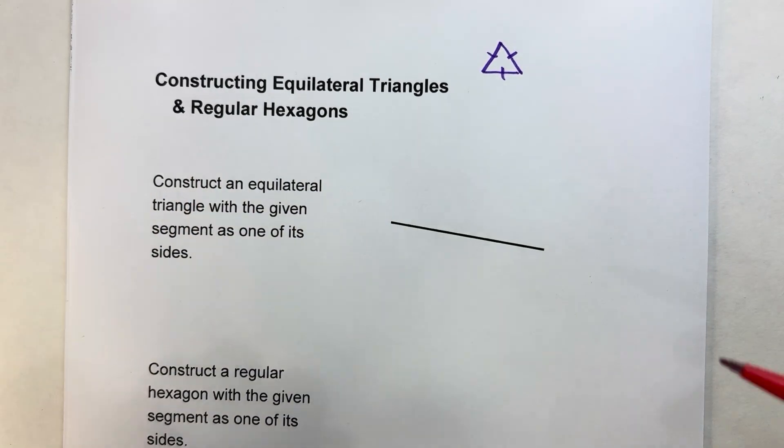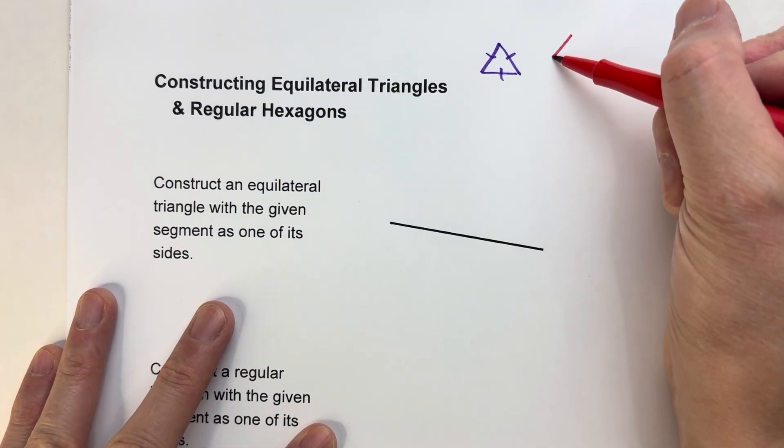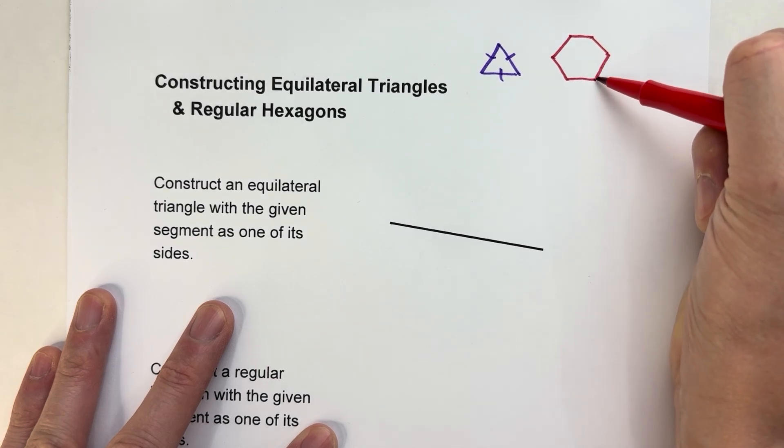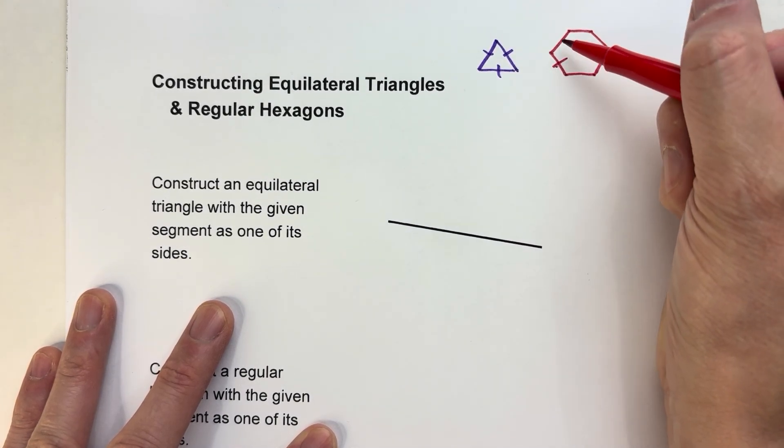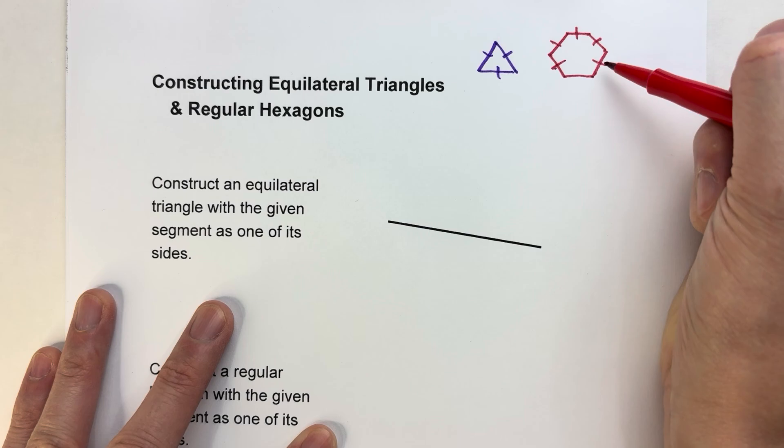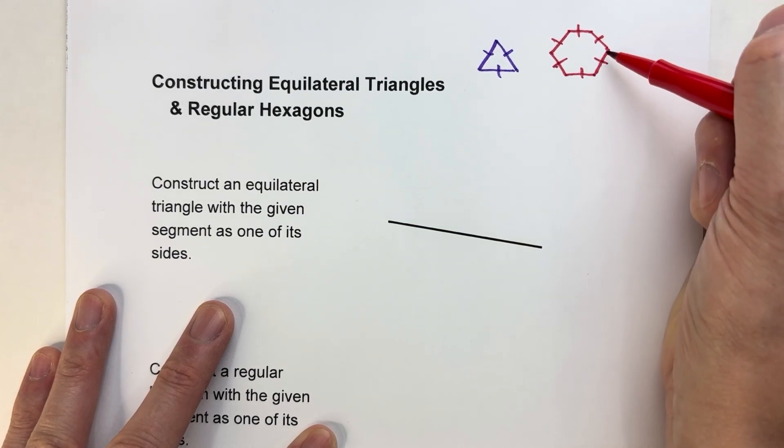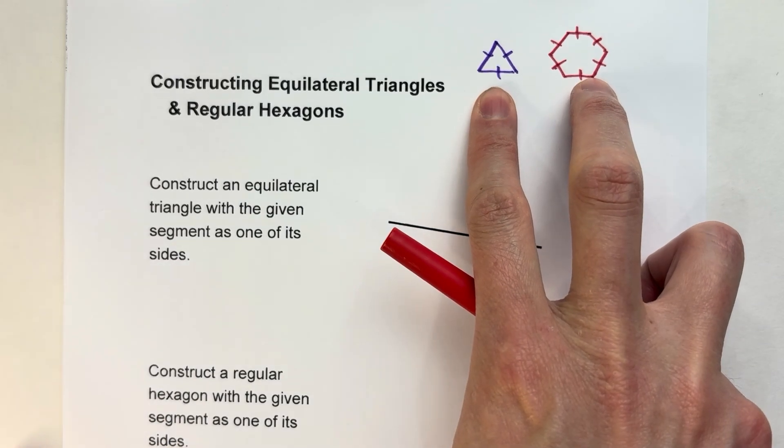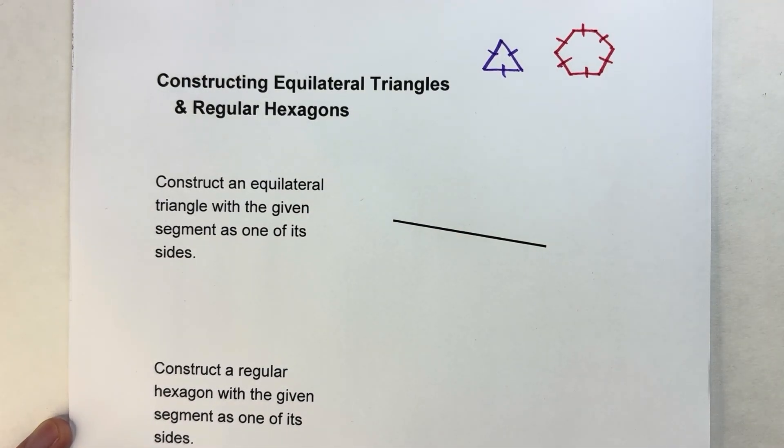A regular hexagon has six sides where all six sides are the same length and all the angles inside are the same angle measure. It turns out these two are related, so if you're able to make one you can also make another.